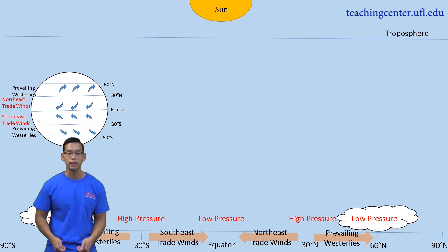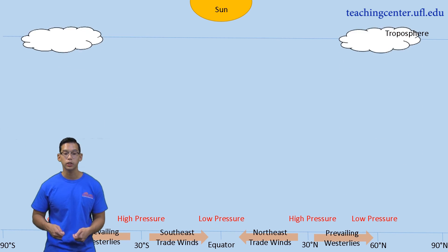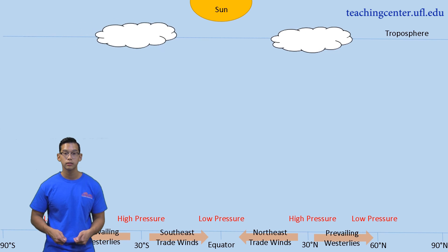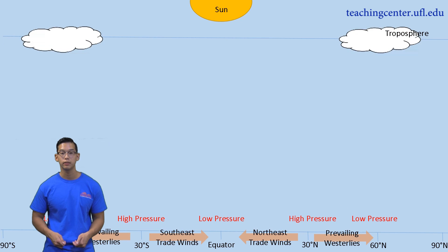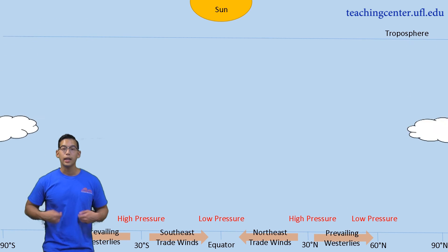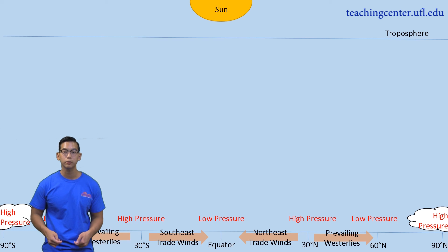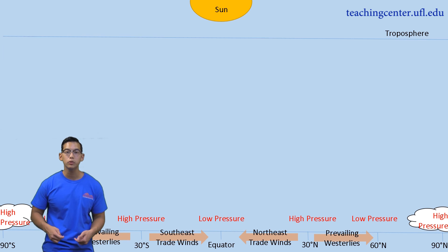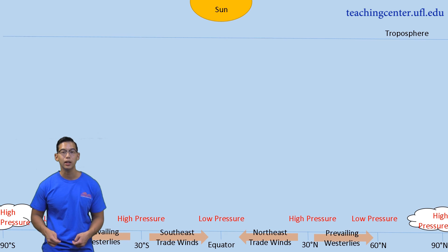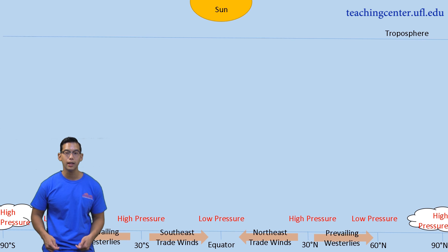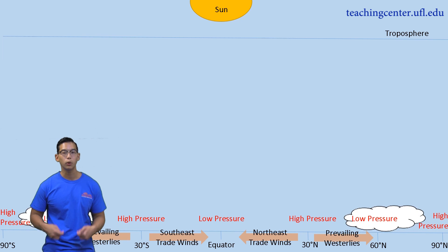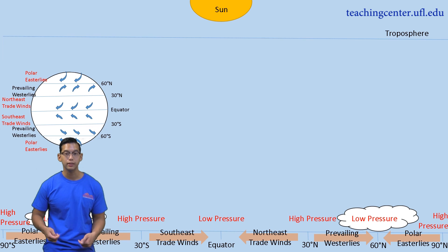Now, at 60 degrees latitude, air rises and can either return to 30 degrees latitude or travel to 90 degrees latitude. Air that moves to 90 degrees latitude creates our polar cells. Air begins to cool as it reaches 90 degrees latitude and eventually begins to sink, creating an area of high pressure. Similar to our other wind cells, air likes to move from an area of high pressure to an area of low pressure, so wind travels from 90 degrees latitude to 60 degrees latitude, creating our polar easterlies. If we viewed these winds from a global perspective, we would see them travel from east to west.